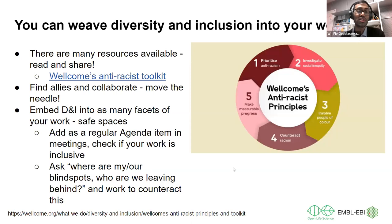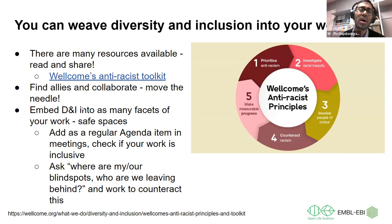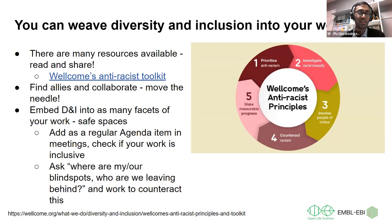So how can you weave diversity and inclusion into your work? There are many resources available — one is the WELCOME anti-racist toolkit that came out about a year ago. Race and ethnicity is only one axis; there are many different axes, and to be truly inclusive you need to take an intersectional approach — thinking about how different characteristics can be present in more than one person and have really different effects in different spaces.